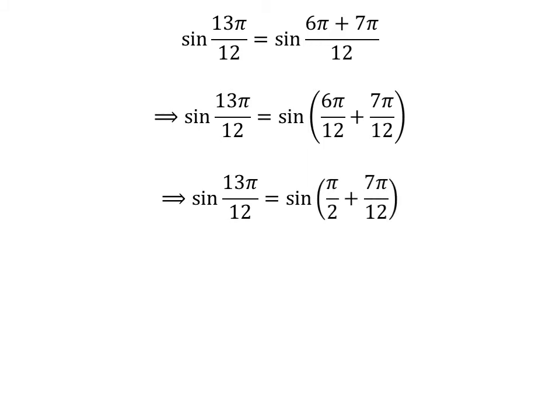Cancelling out the common factor in the numerator and the denominator in each fraction gives us sine of 13 times pi upon 12 is equal to sine of pi upon 2 plus 7 times pi upon 12.